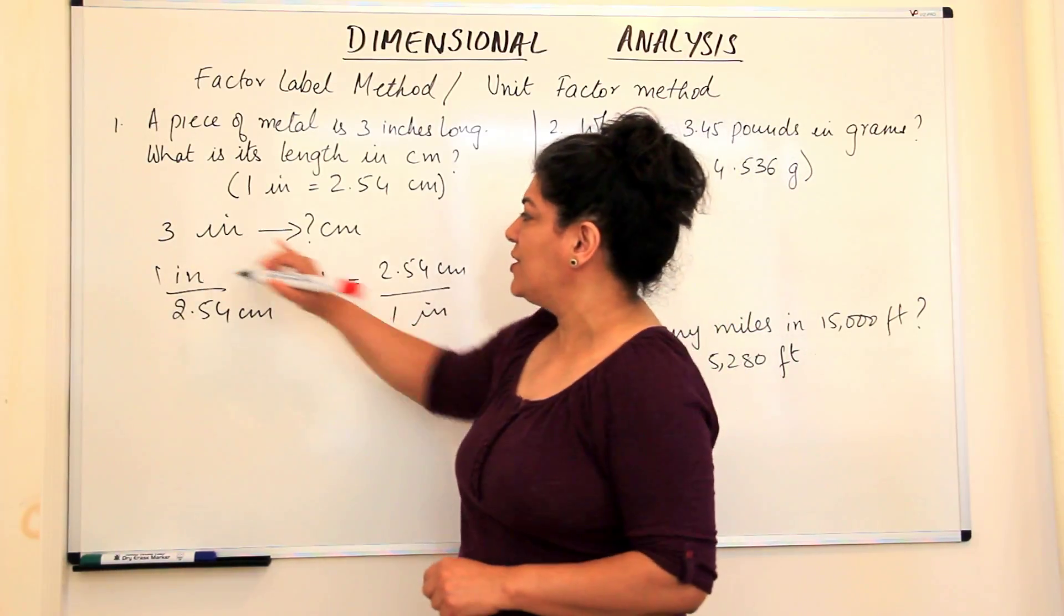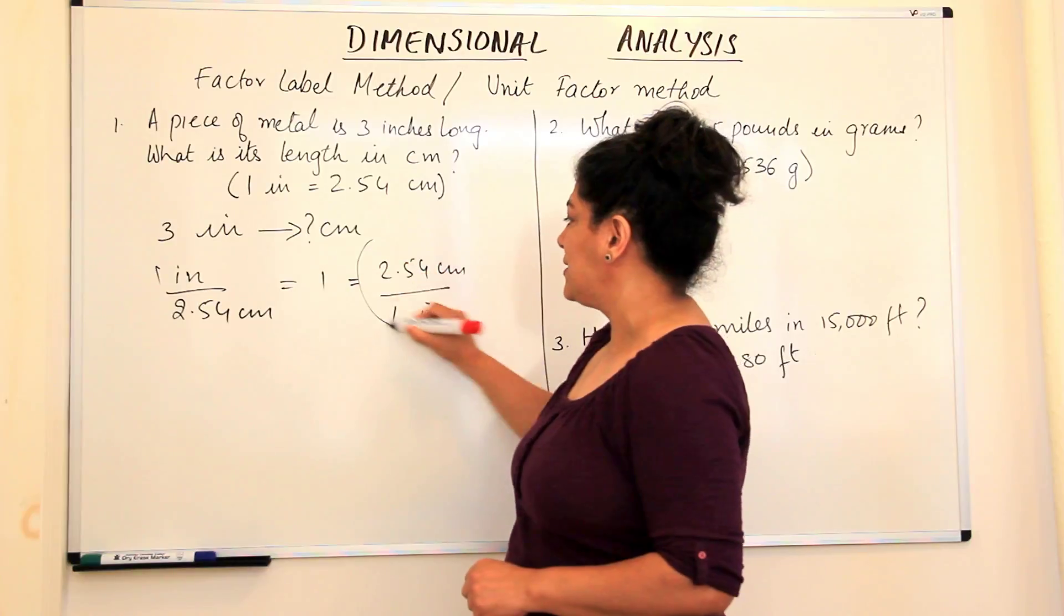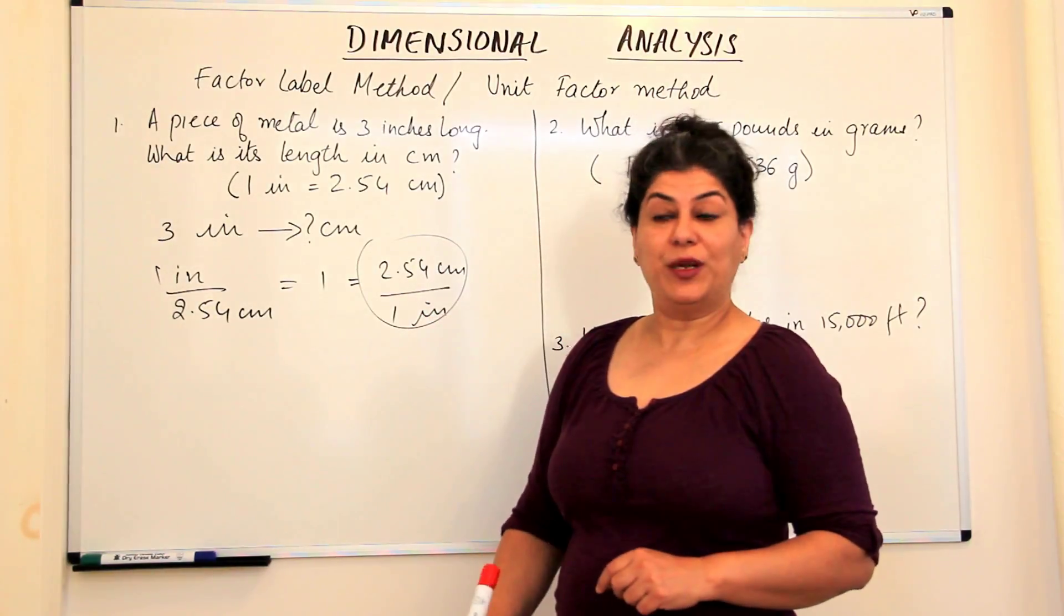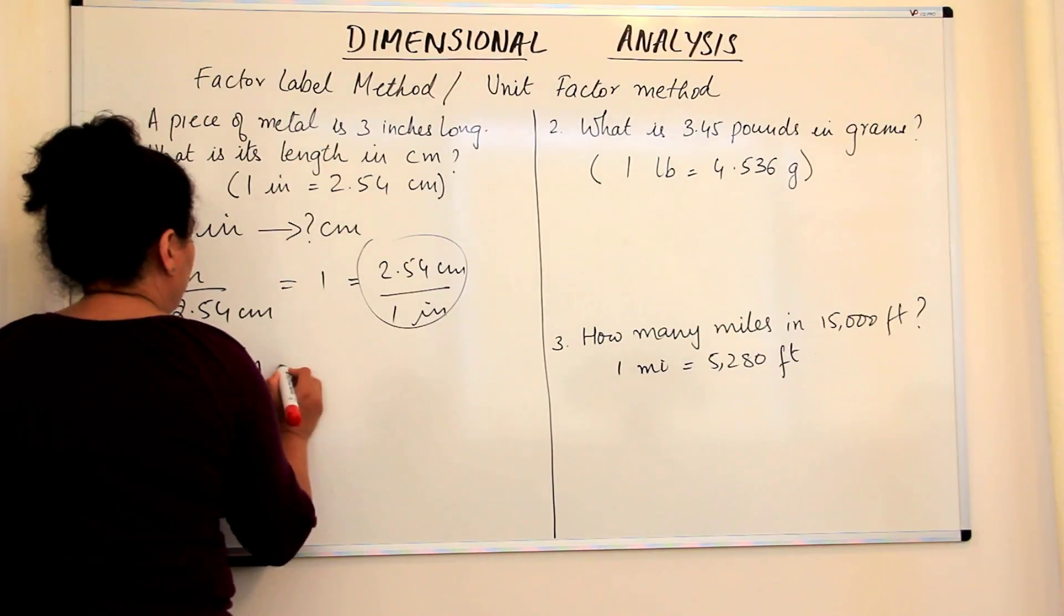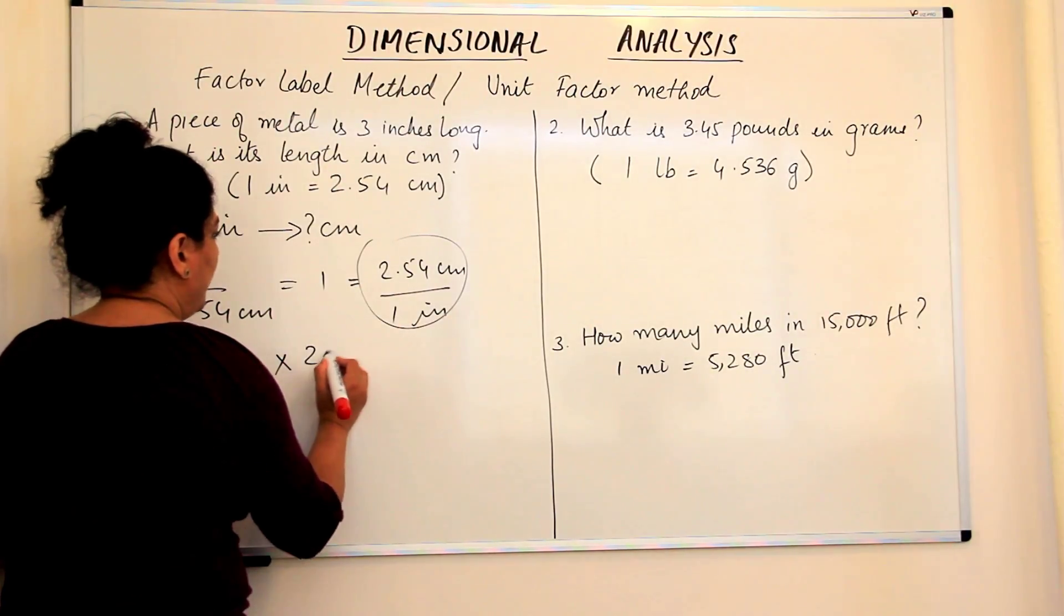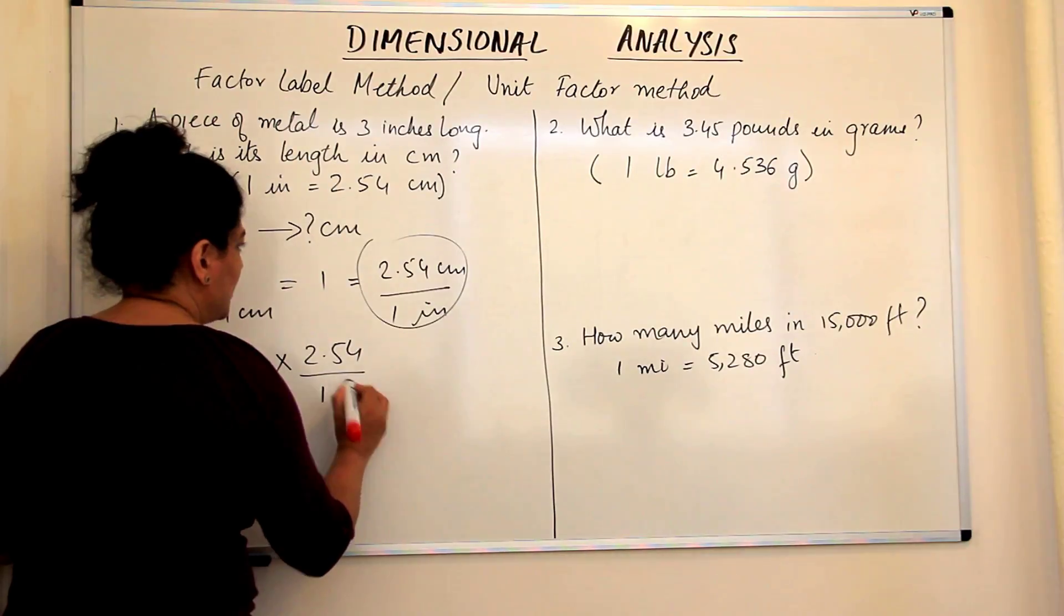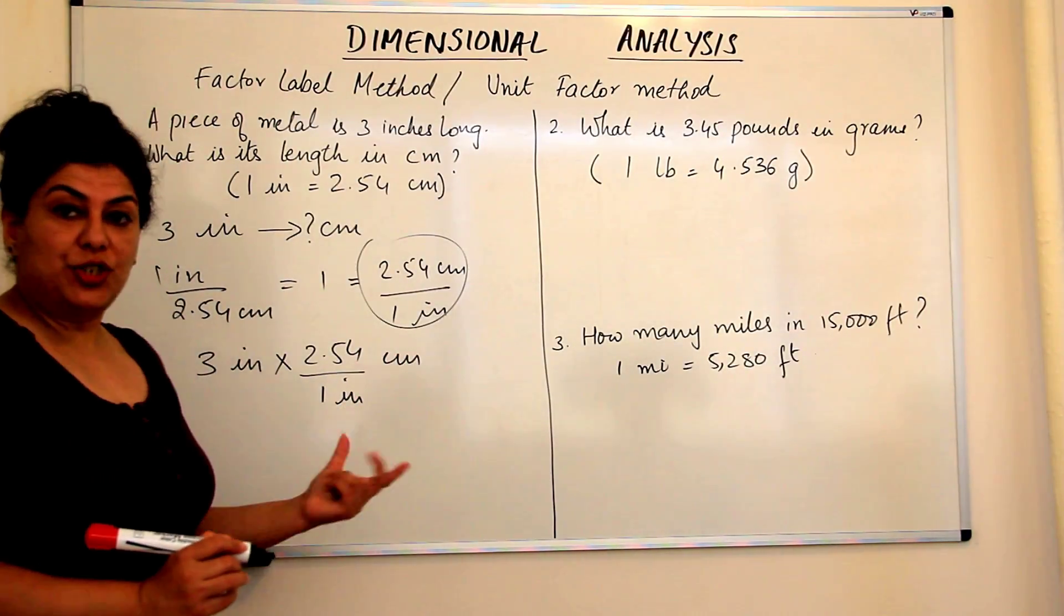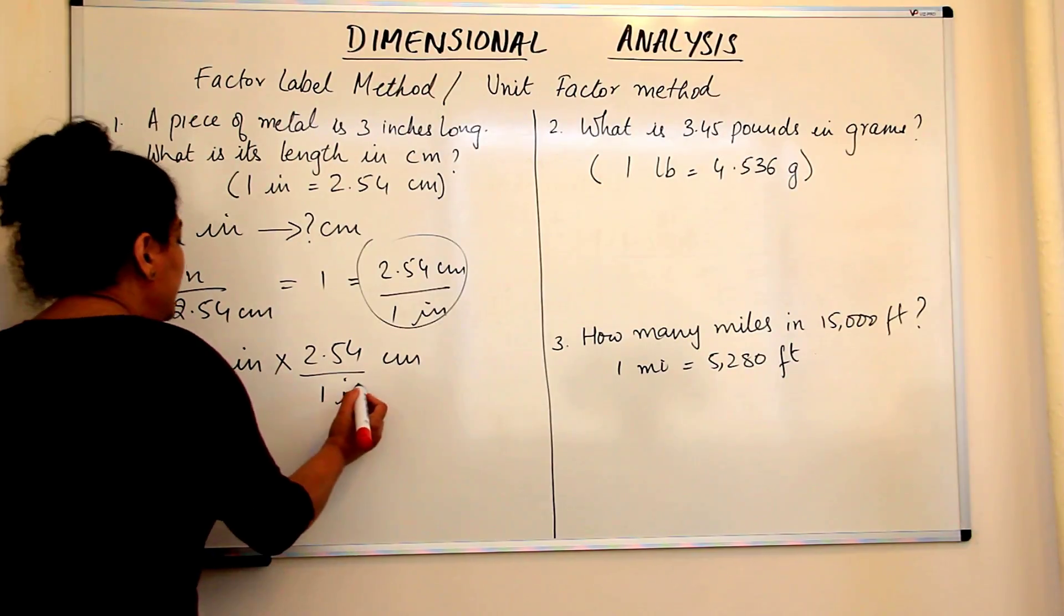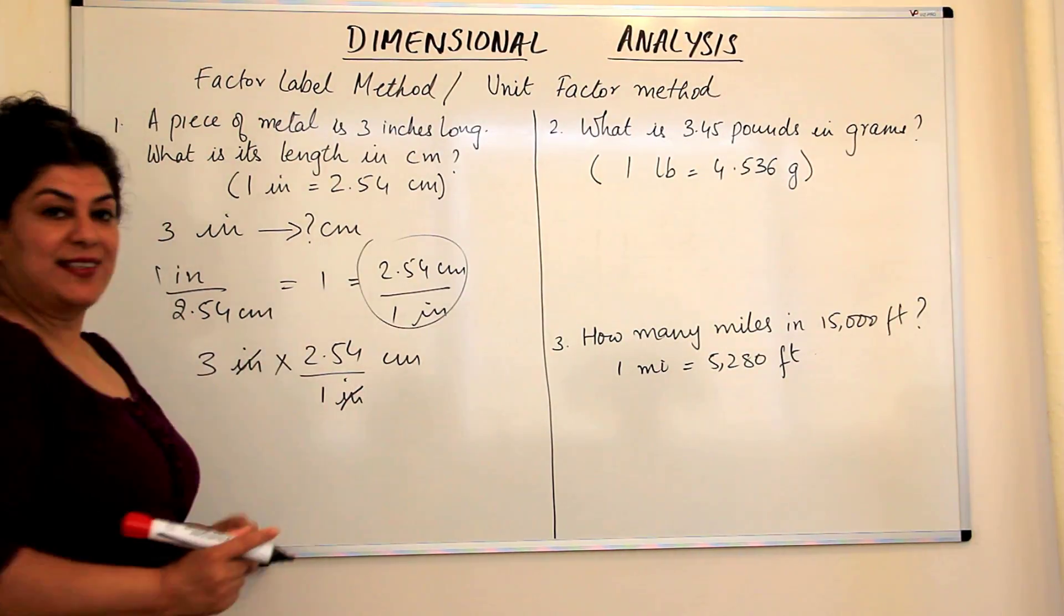Which is the one which has inches in the denominator? This unit factor has inches in the denominator. So 3 inches multiplied by 2.54 centimeters upon 1 inch. This would be our conversion formula.